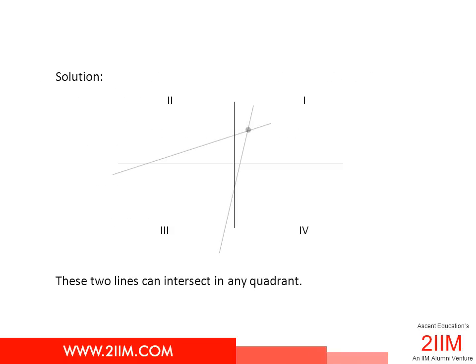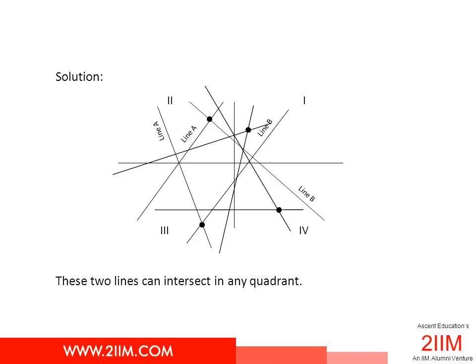We can draw Line A passing through quadrants 2 and 3 and Line B passing through quadrants 1 and 4 in such a way that they intersect in quadrant 1, or quadrant 2, or quadrant 3, or quadrant 4.